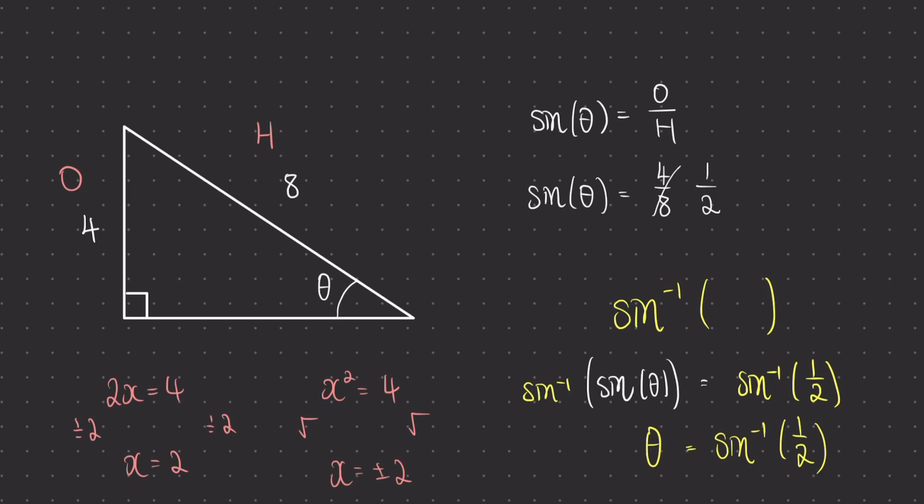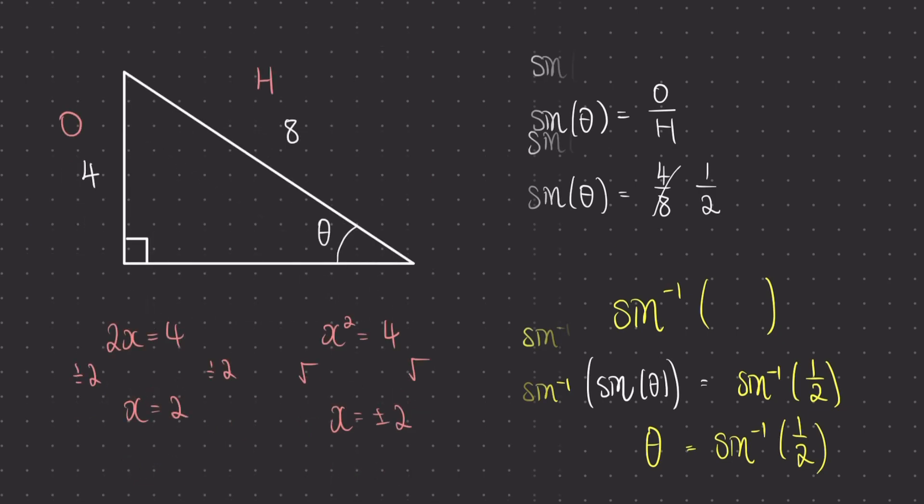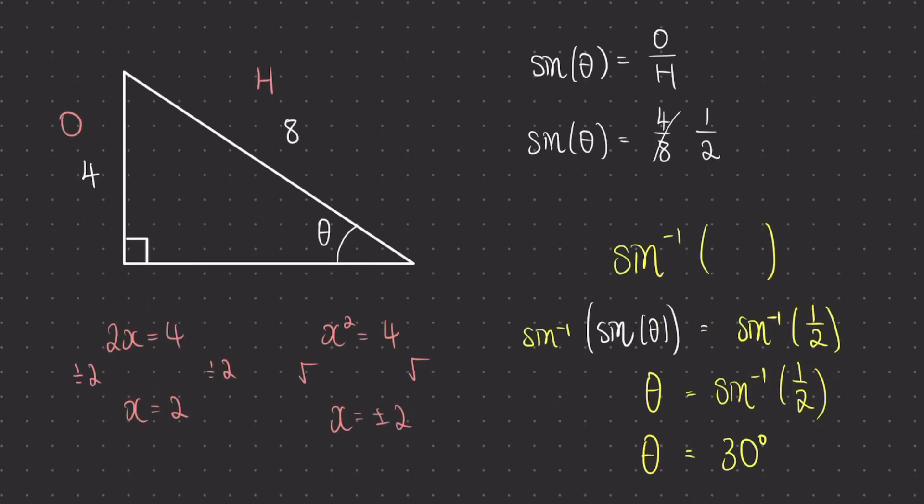Above your sine, cos, and tan buttons on your calculator you should find inverse sine, inverse cos, and inverse tan. Placing that into the calculator should return us with the solution theta equals 30 degrees.